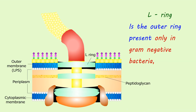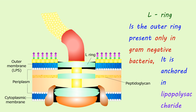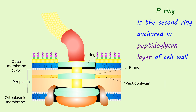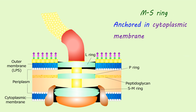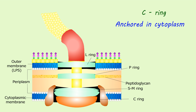L-ring: it is the outer ring present only in gram-negative bacteria, anchored in the lipopolysaccharide layer. P-ring: the second ring, anchored in the peptidoglycan layer of the cell wall. MS-ring: anchored in the cytoplasmic membrane. C-ring: anchored in the cytoplasm.